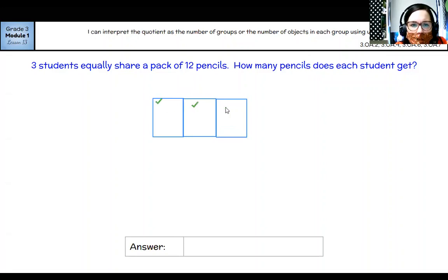So I'm going to fair share these: one, two, three, four, five, six, seven, eight, nine, 10, 11, 12. And I can see that each student is going to receive how many pencils? Four. So 12, a pack of 12 pencils divided between three students equals four for each student.